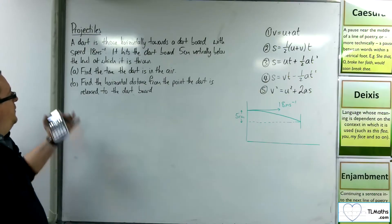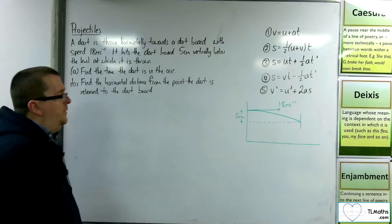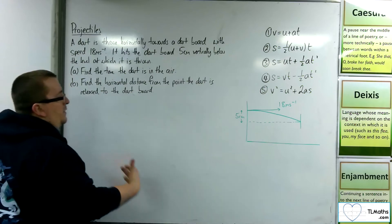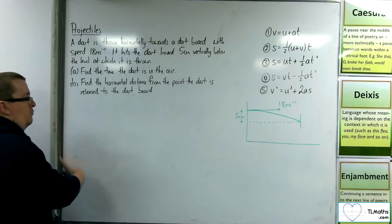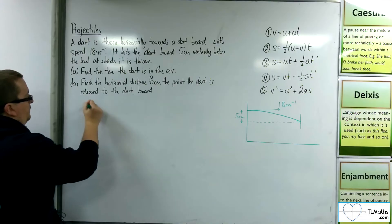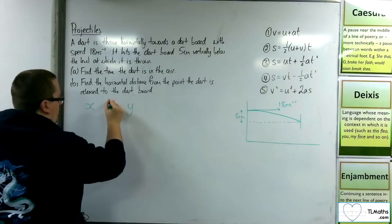So what we're asked to do first is find the time the dart is in the air. So let's set up a SUVAT equation to look at the horizontal and vertical components. So horizontal and vertical.